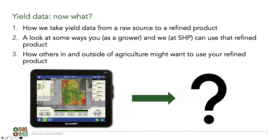For today, we're going to talk about what we do now that we have that yield data. First and foremost, we'll discuss how we go through the process of taking yield data from a raw source and refining it into something that can be used for decision making — furthering the cause of agriculture and ultimately helping growers make more profitable and smarter decisions for the environment, inputs, and their farm. We'll also look at ways that growers, ag industry, and SHP can use that refined product, and how others in agriculture are using yield data in their day-to-day business.